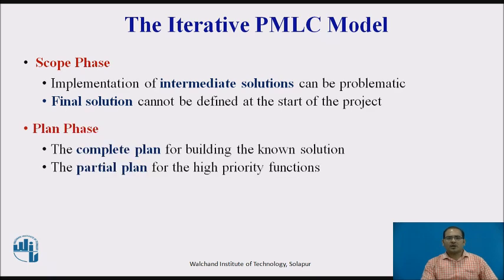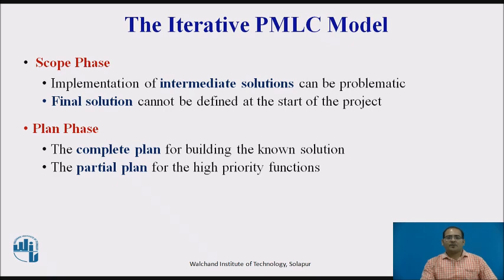Planning is done at two levels in an Iterative PMLC Model. The first is the complete plan for building the known solution; the first iteration in this plan may be of long duration in order to accommodate building a production version of the entire known solution. If this iteration will be too long, you might consider using a tool to model the solution instead. The second is the partial plan for the high-priority functions, where you begin by prioritizing the functions and features in the initial requirements.